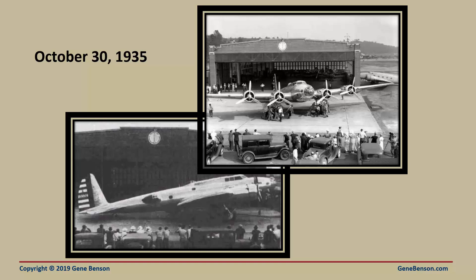Boeing's planes could carry five times as many bombs as the Army had requested. It could fly faster than previous bombers and almost twice as far. The flight competition was to be merely a formality — the Army planned to order at least 65 of the aircraft. A small crowd of Army brass and manufacturing executives watched as the Model 299 test plane taxied onto the runway. The plane roared down the tarmac, lifted off smoothly, and climbed sharply to 300 feet.